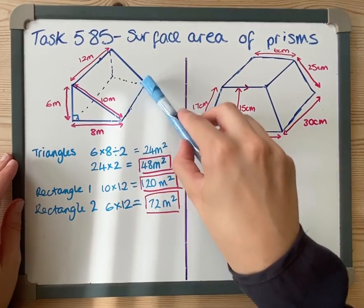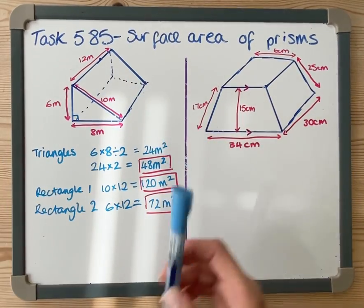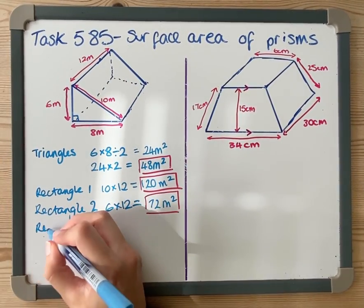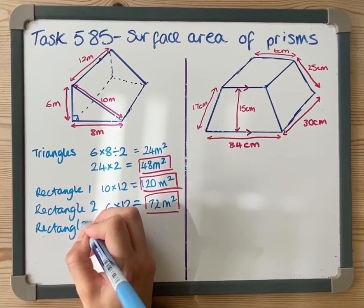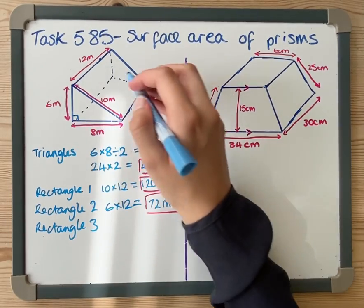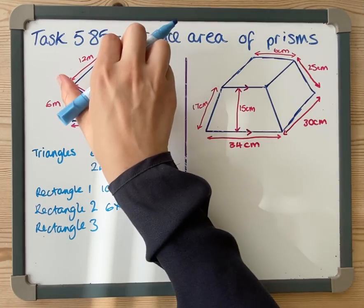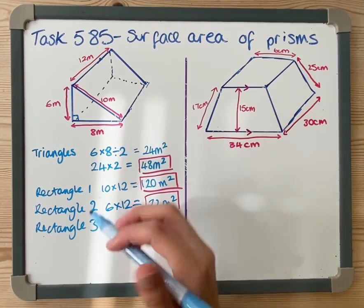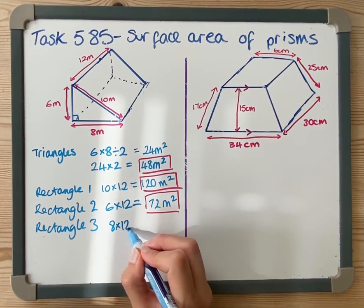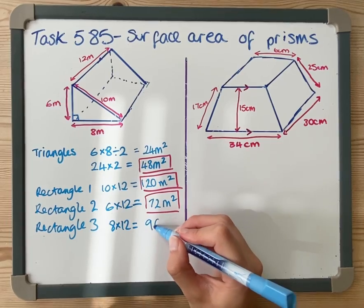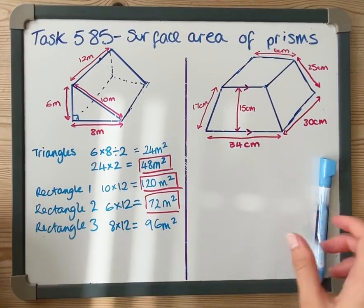And then rectangle three, that's this one at the bottom there. I think I keep saying triangle, I mean rectangle. Rectangle three, this one at the bottom is going to be 8 by whatever that length is. Because that length is 12, that is also 12, so it's 8 by 12, which is 96 meters squared.